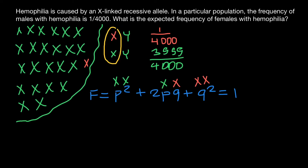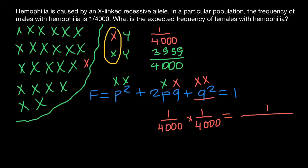Basically, the probability for a female to belong to the homozygous recessive genotype is the product of the probability that each X chromosome carries the defective allele. It's 1 out of 4,000 for the first X chromosome, and 1 out of 4,000 for the second. So the answer is 1 out of 16,000,000.